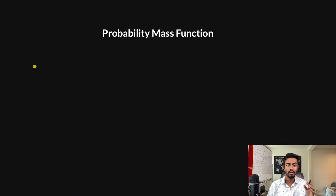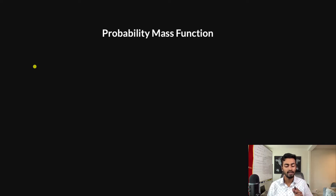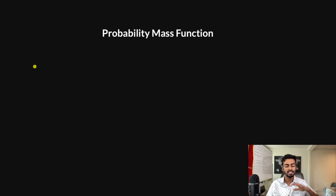Hello everyone, and welcome to another episode of Code Emporium, where we're going to talk about the probability mass function. Probability mass functions are probability distribution functions for discrete random variables. For concepts like discrete and continuous random variables and probability distribution functions, I have created separate videos, so please do check them out. I'm going to explain everything from an initial concept of an experiment and try to tie probability mass functions to some real-world concept.